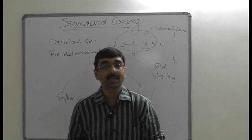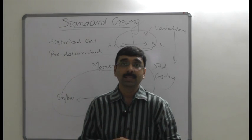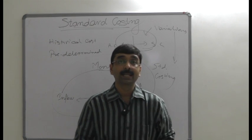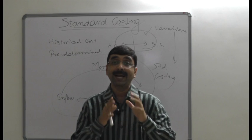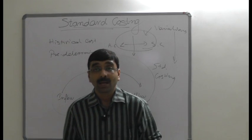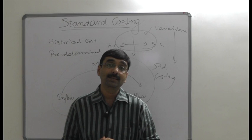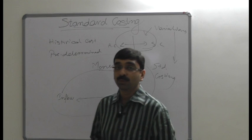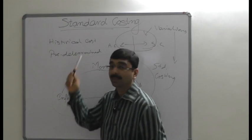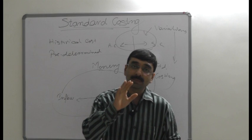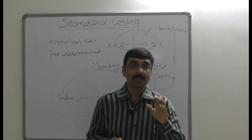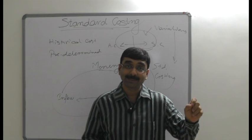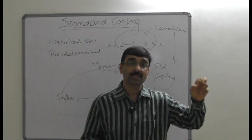According to Joseph, standard costing involves the preparation of costs based on predetermined standards and continuous comparison of actual costs with them for the specific purpose of guidance and control. Moving to historical costing: historical costing is based on historical cost, which is known as actual cost — the cost determined in the past for a specific task.